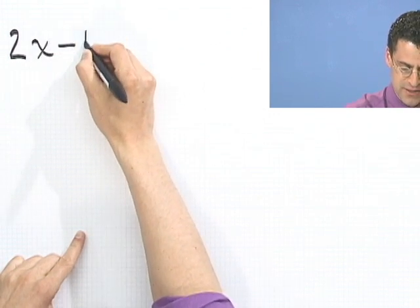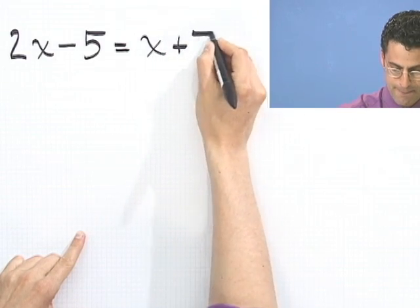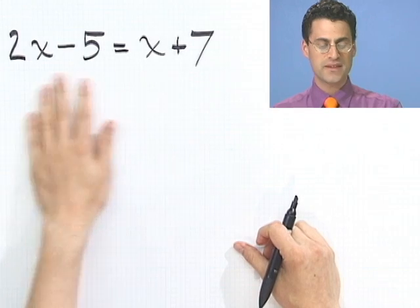2x minus 5 equals x plus 7. What we want to do is we want to find out what value of x will satisfy this. Now let me just say just two words here to remind you what's going on here. x is really just a placeholder. x represents some mysterious number that someone has hid from us. It's like a hiding, in fact, think of it as hide and go seek, right? Someone's hiding and we have to find x. Okay, now how do you do that? Well, you know that this relationship holds.